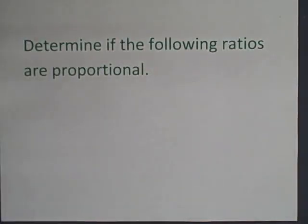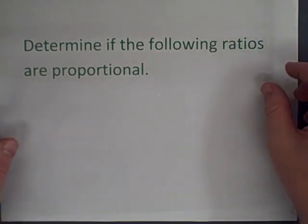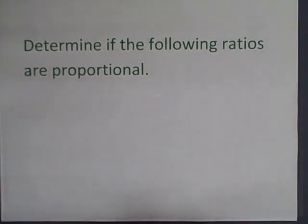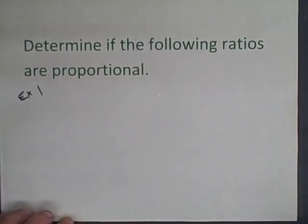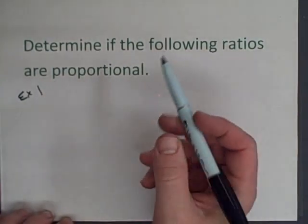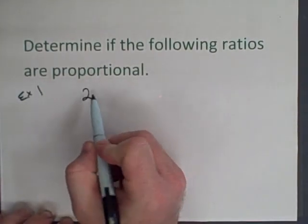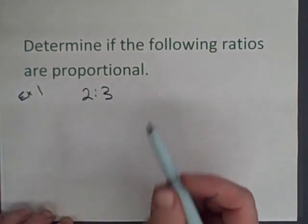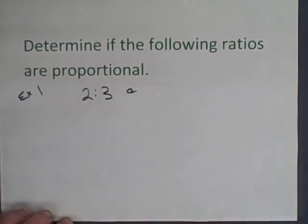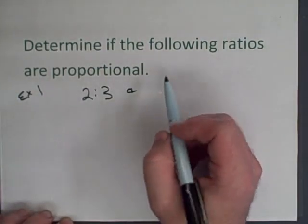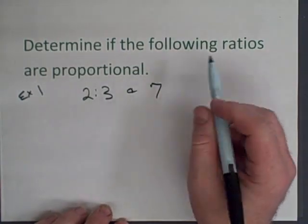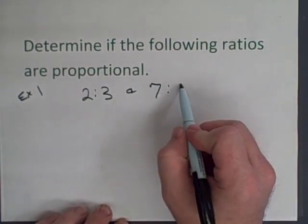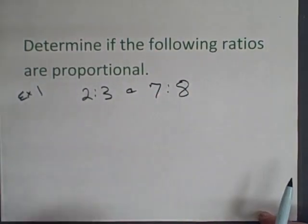Now let's look at what it means to determine if ratios are proportional or not. For example let's say we have a ratio of two to three and another ratio of seven to eight. And we want to know if they are proportional.